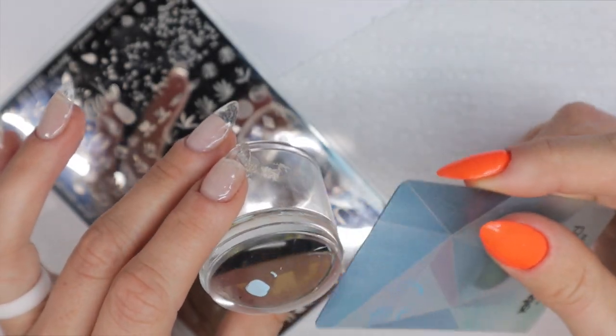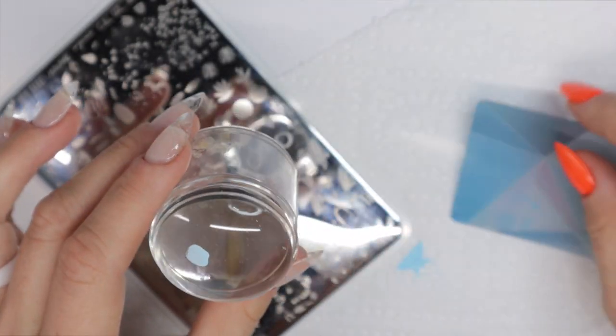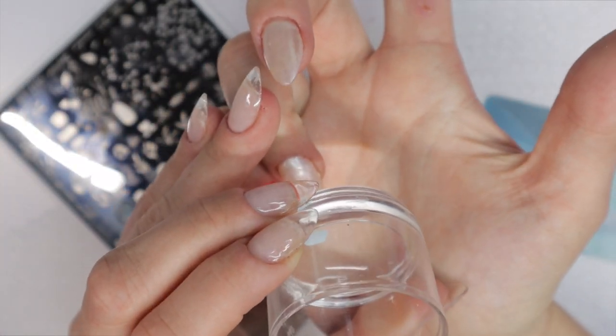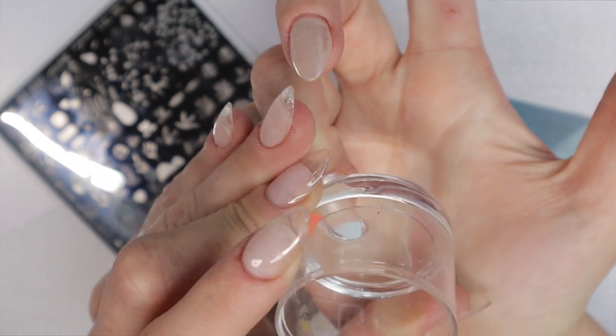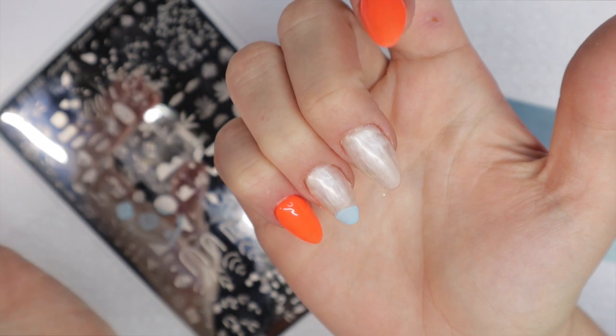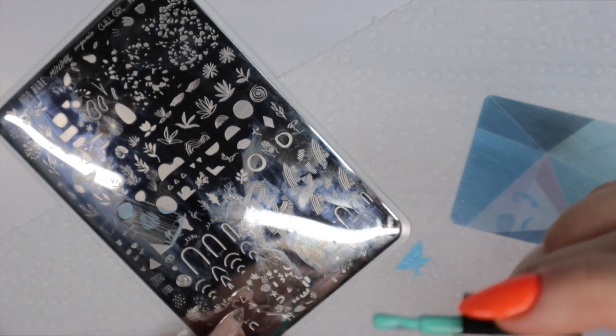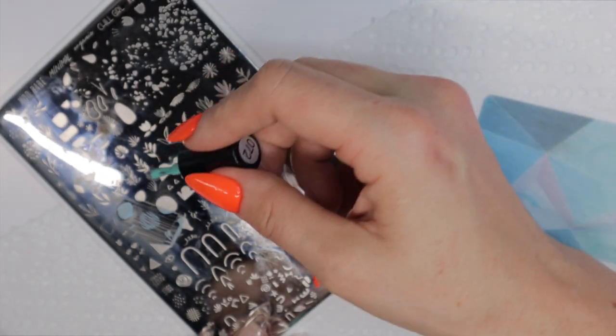Now I have the design on my stamper and I'm going to transfer it to my nails just simply by gently pressing it onto my nail like that, rolling it around a little, and bada bing bada boom it's on my nails. I want to do this multiple times with different colors.